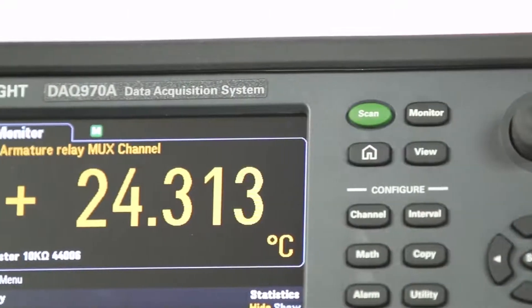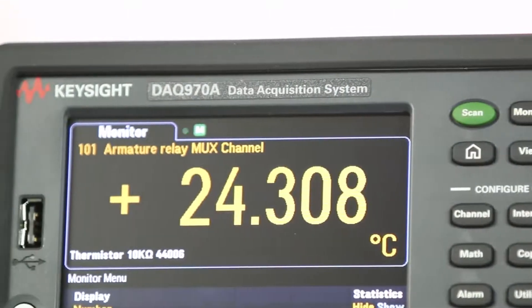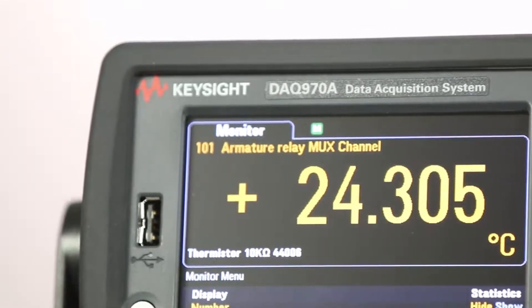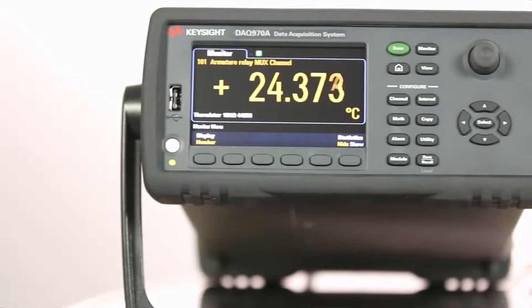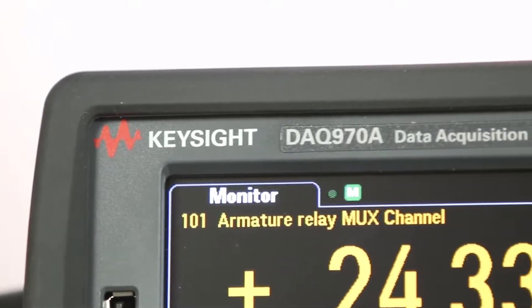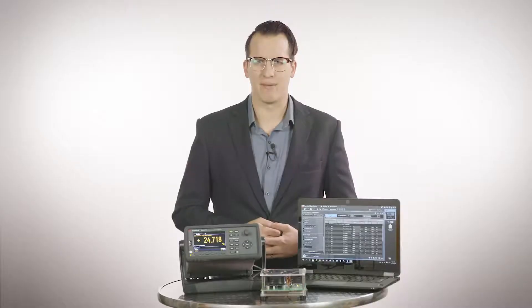The DAQ 970A builds on the proven design of the 34970A and 34972A. The DAQ 970A mainframe has a built-in advanced 6.5-digit DMM and signal conditioning that speeds up test development time.